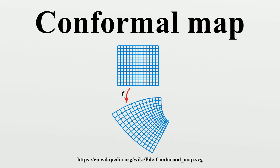If F is anti-holomorphic, it still preserves angles, but it reverses their orientation. In the literature, there is another definition of conformal maps: a map F defined on an open set is said to be conformal if it is one-to-one and holomorphic.